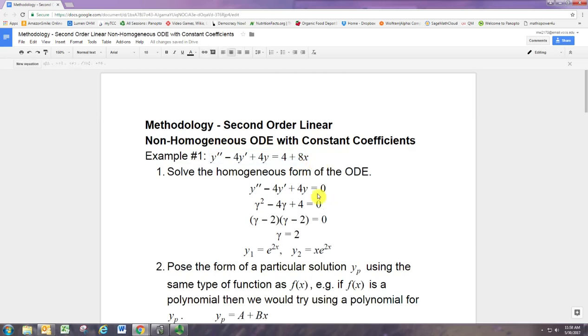Alright, now no matter what the right-hand side is, you want to solve the homogeneous form first. And so you just take the same ODE, but replace the right-hand side with zero. And we talked about that in the previous methodology, how that works, so we won't go into all the details, but we think it's e to the gamma t, e to the gamma x.